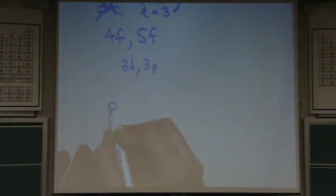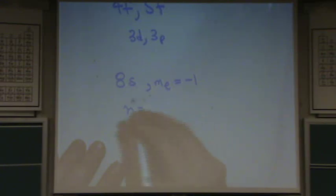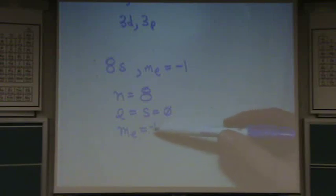Okay, let's do eight S, where M sub L equals minus one. Is that okay? Okay, N equals, in this example, eight, L, zero, and then M sub L, minus one. That's not okay. Do you see why? Because M sub L cannot be larger than L.